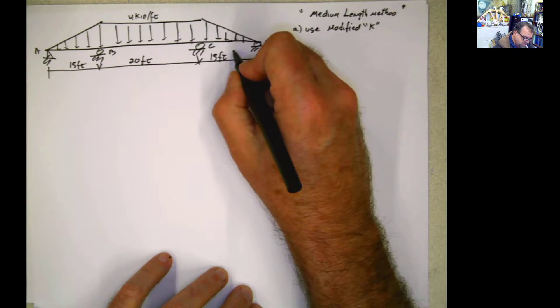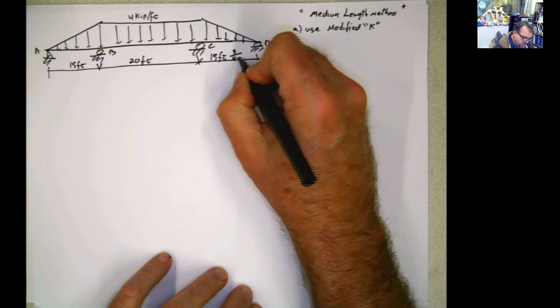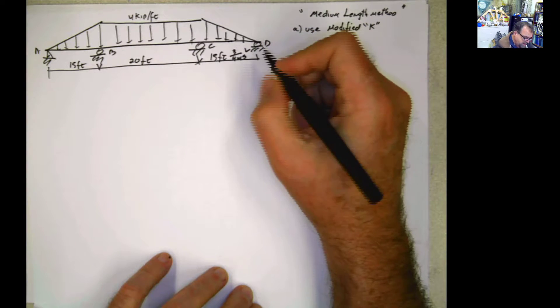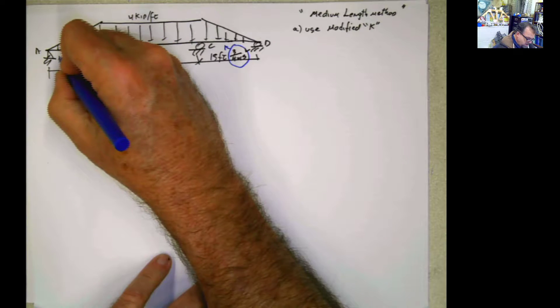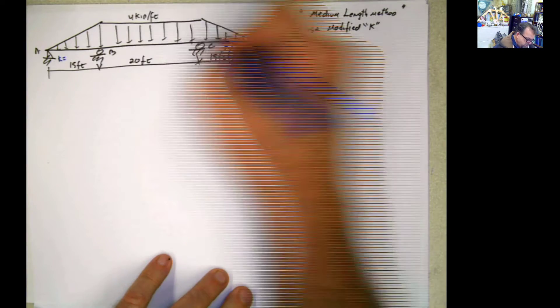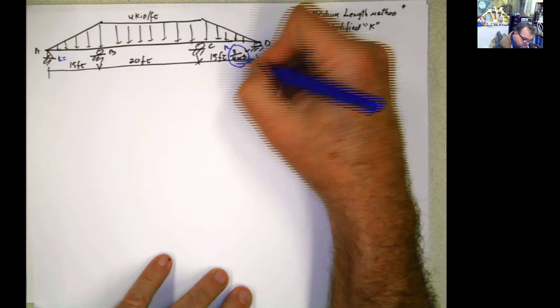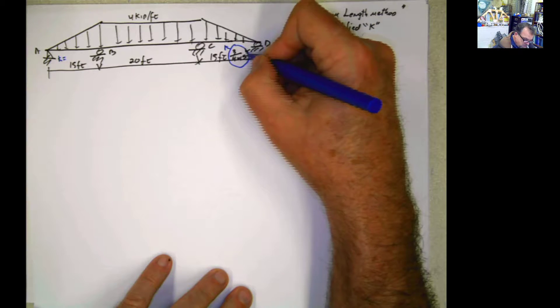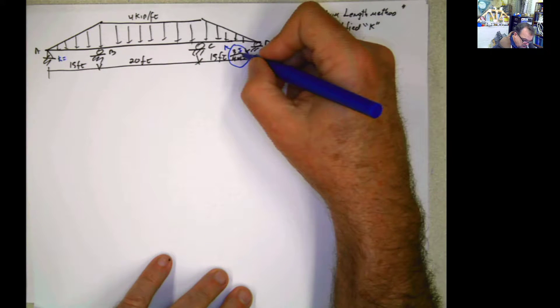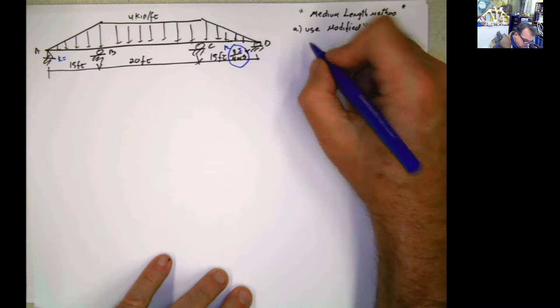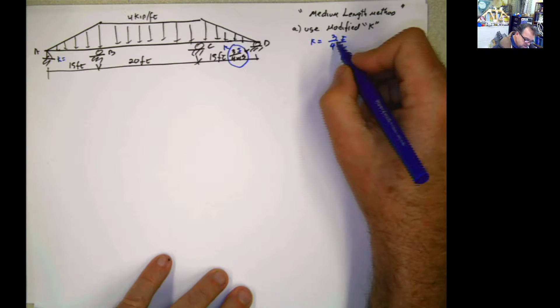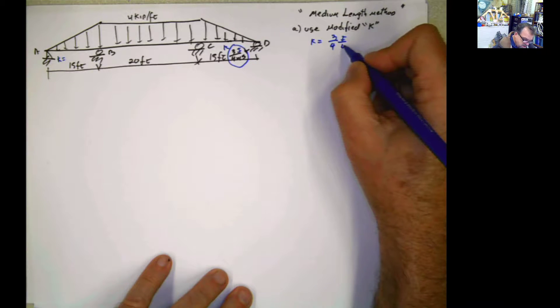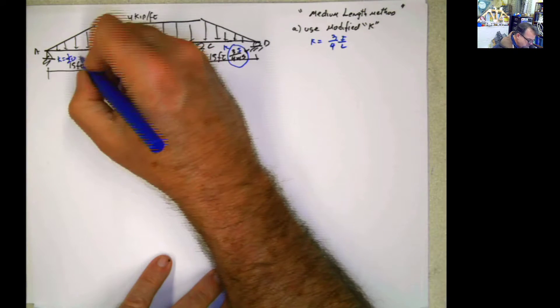If we do that, this is going to be 3 divided by 4 times 15l. That's the k. k here is going to be the same, 3 divided by 4 times 15i. k equals 3/4 i/l. So in this case, if l is 15, this is going to be 60. 3 divided by 60 is 1 divided by 20. So 1 divided by 20i.